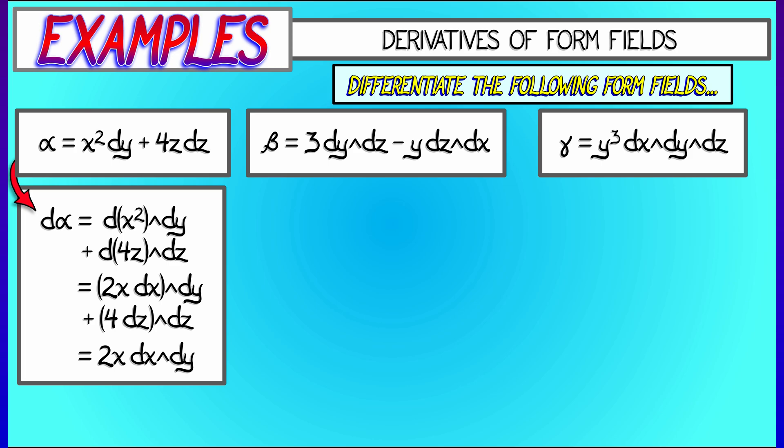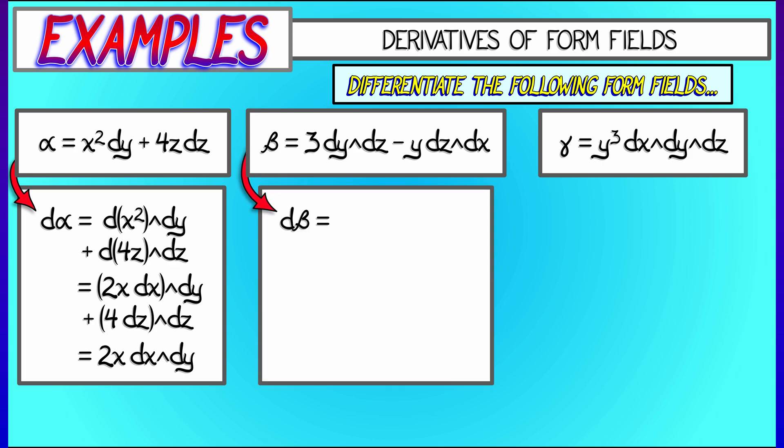The derivative of beta is, following the same rule, the derivative of 3 wedged with dy wedge dz, plus the derivative of minus y wedged with dz wedge dx. Now, the derivative of 3 is 0, and the derivative of minus y is minus dy. So, using the fact that 0 times anything is 0, and doing a little bit of rearrangement on that last term, gives me, as an answer, the three-form minus dx wedge dy wedge dz.